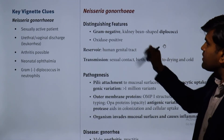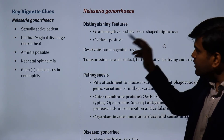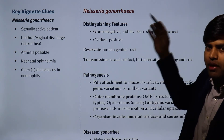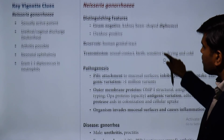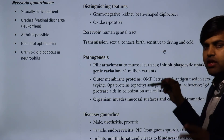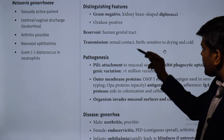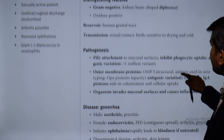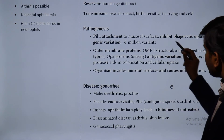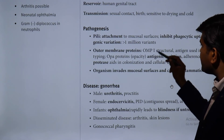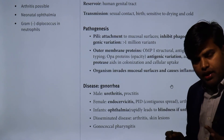Now moving to N. gonorrhoeae. Both Neisseria species ferment glucose, but N. gonorrhoeae does not ferment maltose — that is what differentiates meningitidis from gonorrhoeae. Distinguished features: gram-negative kidney-bean-shaped diplococci, oxidase positive. Reservoir is the human genital tract; transmission is by sexual contact and during childbirth. They are sensitive to drying and cold. Pathogenesis: pili attach to mucosal surfaces, inhibit phagocytic uptake, and show antigenic variation of greater than 1 million variants.